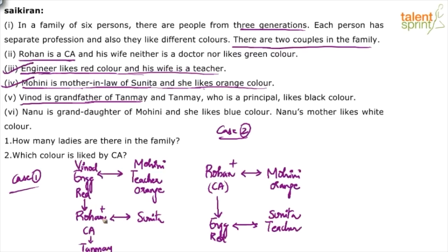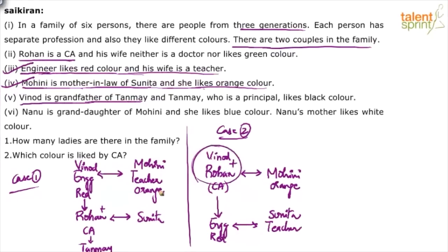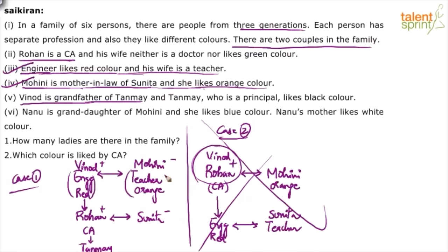In Case 2, Vinod is again the grandfather of Tanmay, which means Vinod should be married to Mohini. But that would make both Vinod and Rohan husbands of Mohini — which is not possible. So Case 2 is ruled out. We can now say Vinod and Mohini form the first-generation couple.